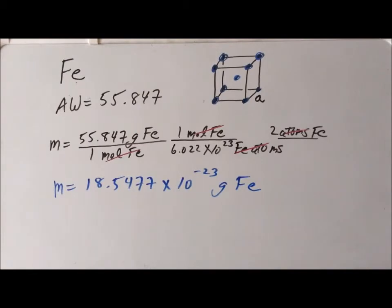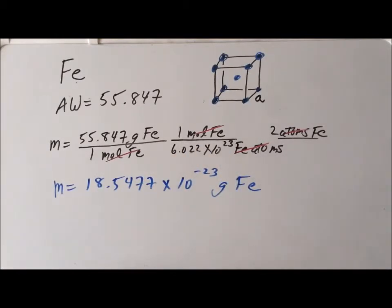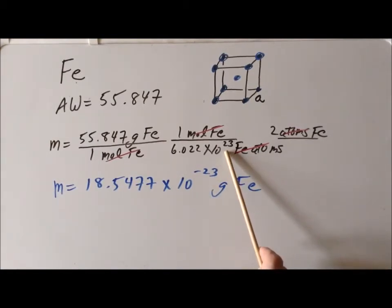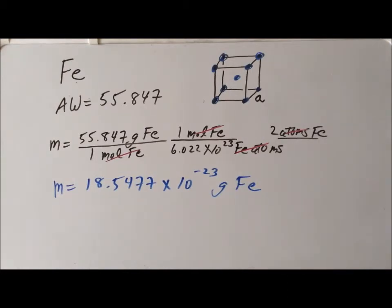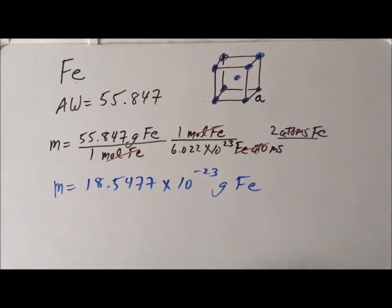At this point, we do a quick reasonableness check. If we did not have a negative exponent, we would know we made a mistake, because unit cells are so small their mass is very much less than one gram. The minus 23 arises from dividing: imagining 10 to the 0 in the numerator, we subtract exponents — 0 minus 23 — giving negative 23. So we are confident in the mass of one unit cell.